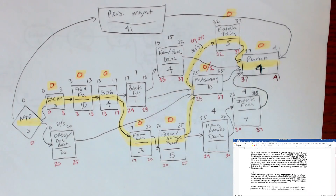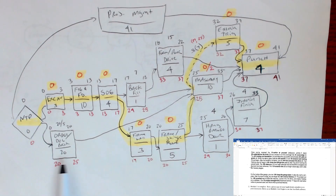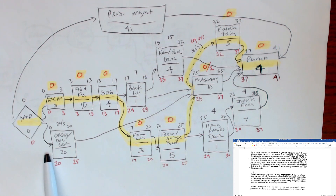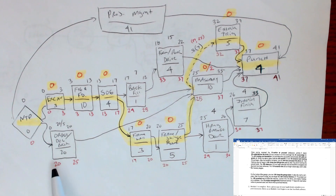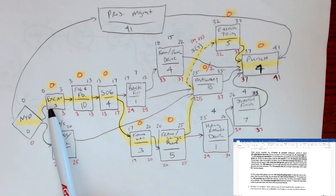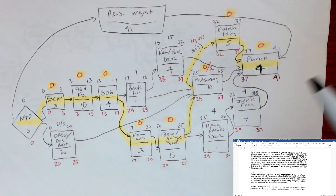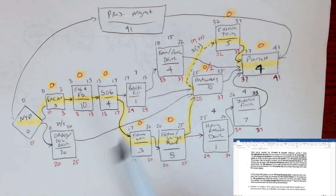If we switch over to the schedule, we see the notice to proceed is here, then it goes to excavation and order and deliver brick. Order and deliver brick is after excavation. The footing and foundation will follow the excavation, and then the excavation precedes the slab on grade. In my text, the numbers are just identifying each activity with a particular number.